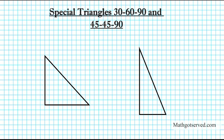Good day students. In this clip we're going to be going over three examples on how to use the special triangles to solve the missing sides of a right triangle. The special triangles we're going to be considering today are the 30-60-90 triangle and the 45-45-90 triangle.